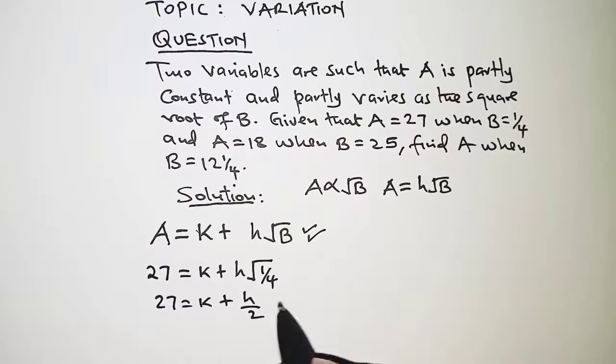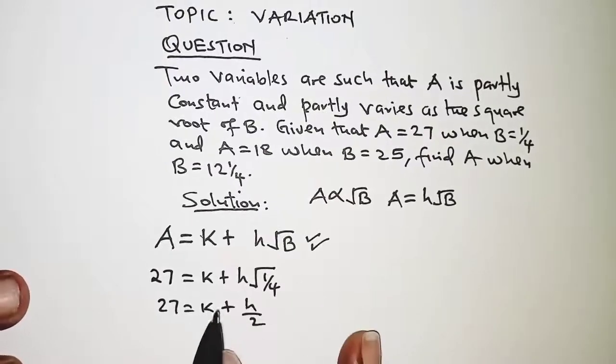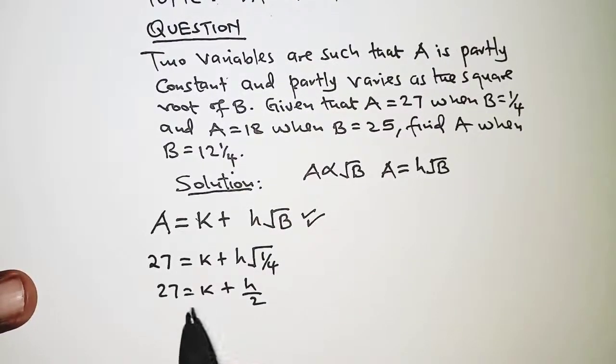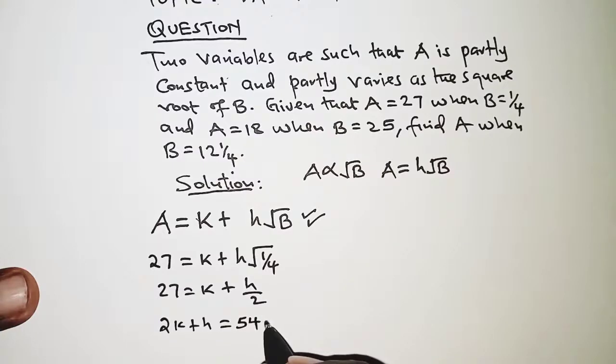We are going to multiply all through by the LCM which is 2, and that should give us the equation written as twice k plus h is equal to 54. Let's have this as our first equation.